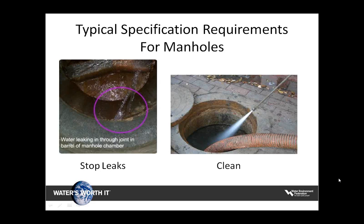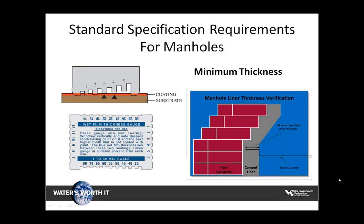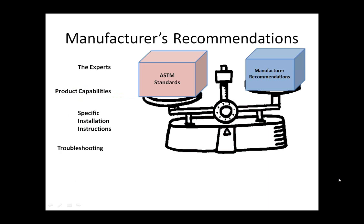Typical specification requirements for manhole rehab include stopping all leaks before applying your product and prepping or cleaning the manhole prior to application. Thickness requirements are typically included; the inspector has tools to verify thickness, such as a wet film thickness gauge for epoxy coatings and a small diameter wire to verify the thickness of cementitious coatings. Typically the ASTM standards hold more weight than manufacturer recommendations, as ASTMs are recognized as industry standards that have been peer reviewed. However, an inspector must question any discrepancies between field conditions and what is written in the specifications.